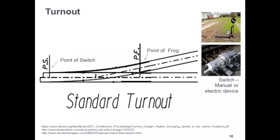There are a few more definitions important to capture before we go on to single and double track. A turnout enables trains to be guided from one track to another — it is curved track, mechanically controlled by a switch. Turnouts occur at all spurs, sidings, and junctions. The point of switch is where the switch causes the rail to shift to allow the train wheels to divert to another track. The point of frog is the intersection of two rails. Are the words switch and turnout used interchangeably? Pretty much, yes — it's the whole arrangement of the rails and mechanisms associated with either merging or diverging tracks.